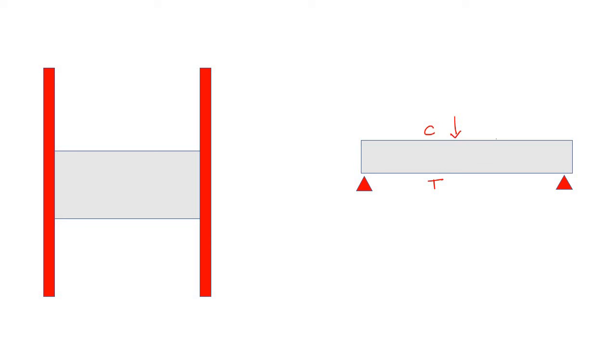Now if you have a slab or a beam like this which is supported at two ends, under any load it will bend and you will have tension at the bottom and compression at the top. Concrete is weak in tension, so it will crack. To resist this, you have to put the reinforcement in place — first along the shorter direction.